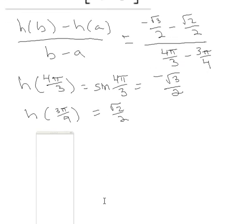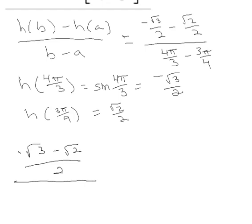Okay, so on this numerator here, you're going to have negative square root of 3 minus the square root of 2, all over 2. And in the denominator, you basically have 4/3 minus 3/4 with a π on it.